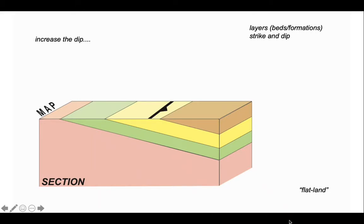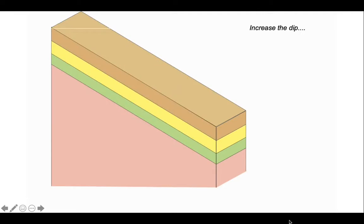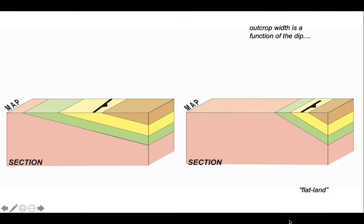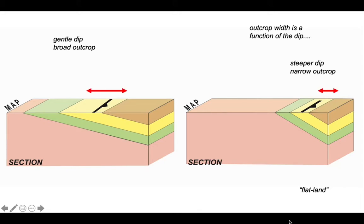Let's go back to our simple cartoon and think about what happens if we increase the dip. Here we have increased the inclination — the dip of our strata — and we can plane it all off again to a flat land. The rocks are dipping to the right in our map view. Comparing the two situations: the first has the lower amount of dip, the second has the higher amount. The outcrop pattern has changed. With a gentle dip, the yellow strata form a broad outcrop measured perpendicular to strike; when the dip is increased, the outcrop width becomes narrower. So we can use the outcrop width to get a qualitative feel for the inclination of the rocks.